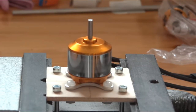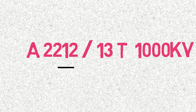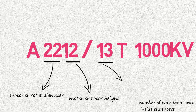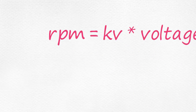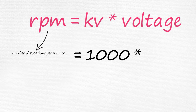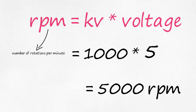Now let's talk about the numbering of motors. In my case it is 2212/13T 1000kV. Here 22 means motor or rotor diameter, 12 means motor or rotor height, 13 means the number of wire turns around each pole inside the motor, and 1000 means revolutions per volt. The formula for RPM is: RPM = kV × voltage. For example, a 1000kV motor supplied with 5 volts produces 5000 RPM under no-load conditions.